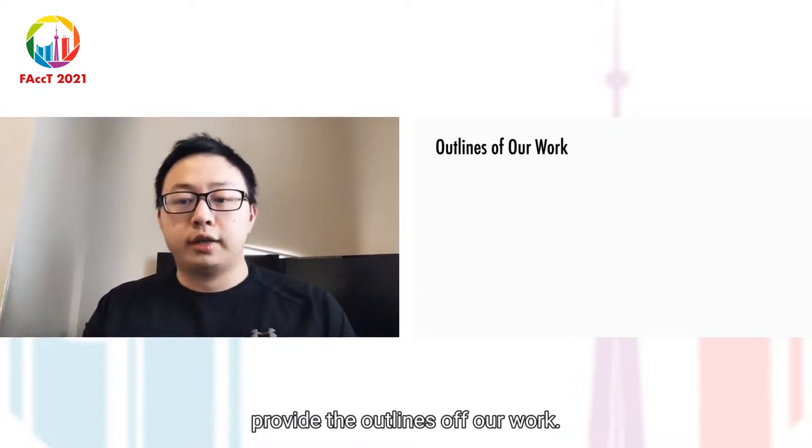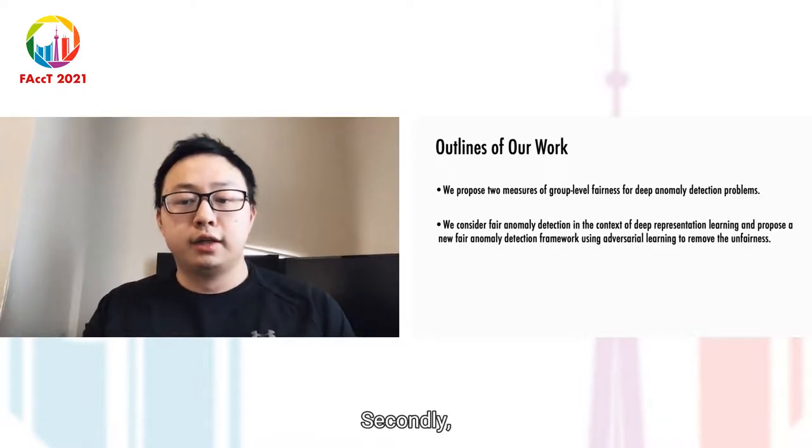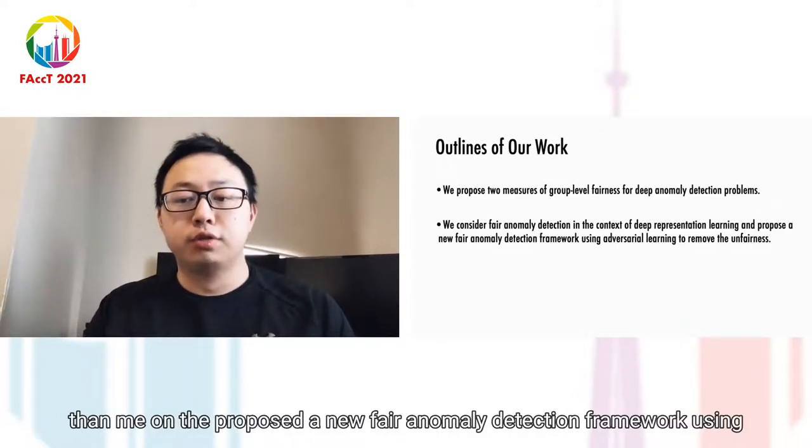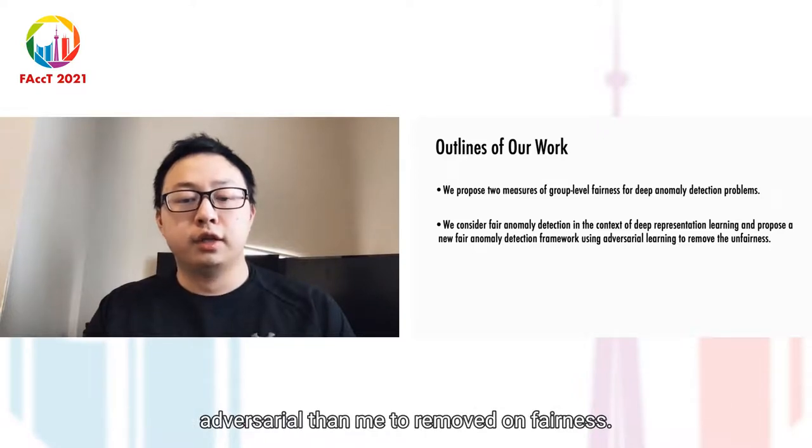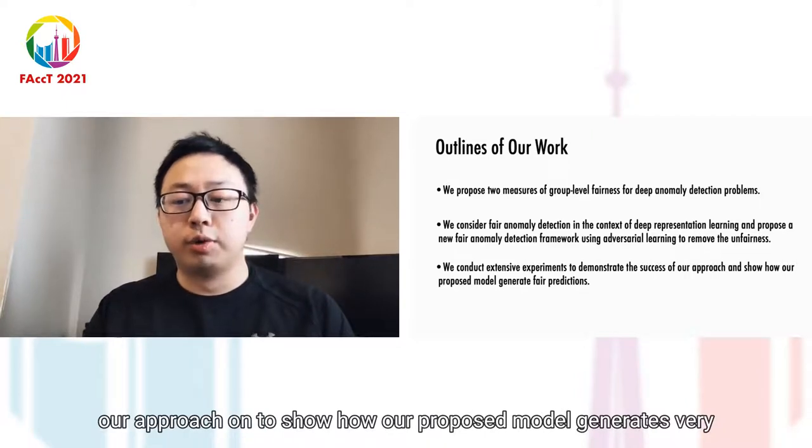Now we provide the outline of our work. First, we propose two measures of group-level fairness for deep anomaly detection problems. Second, we consider fair anomaly detection in the context of deep representation learning and propose a new fair anomaly detection framework using adversarial learning to remove the unfairness. Lastly, we conduct extensive experiments to demonstrate the success of our approach and show how our proposed model generates fair predictions.